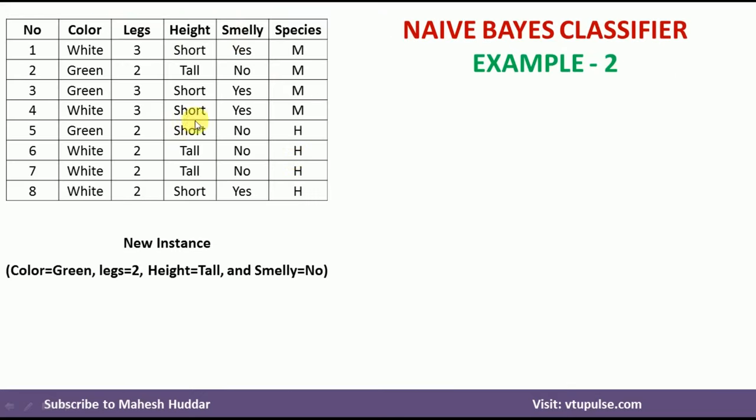This is the dataset given to us. This is the new instance for which we need to calculate the probability and classify it as either M or H.